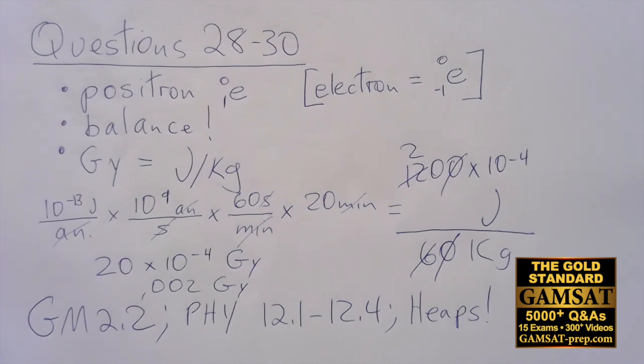Answer choice B, we have 18 plus 1, that's 19 going to 18 plus 0, nope. And 8 plus 1 for the subscripts going to 9 minus 1, so that's 9 going to 8, nope, still doesn't work. B doesn't work for either the superscript or the subscript.